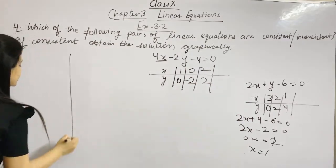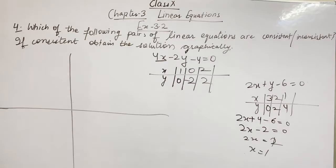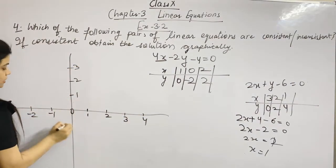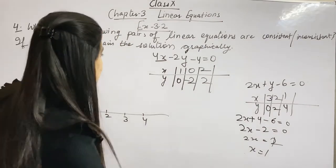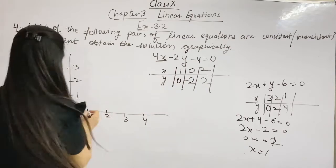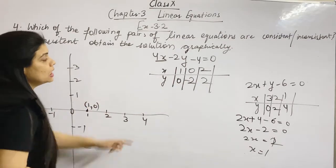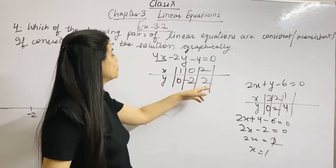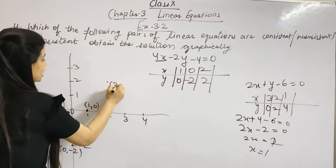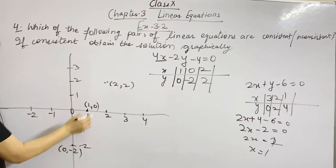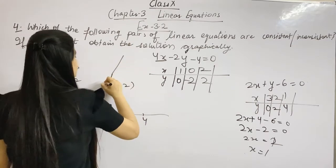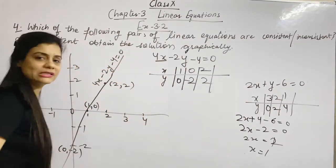Now we plot the points. For the second equation 4x minus 2y minus 4 equals 0, the points are (0, minus 2), (2, 2), and we join them to get the line. For the first equation 2x plus y minus 6 equals 0, the points are (3, 0), (1, 4), and (2, 2). We join these three points to get the line.